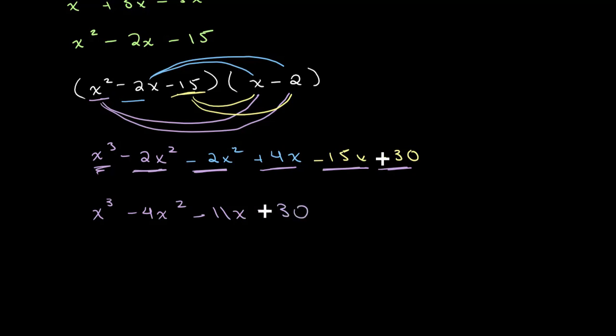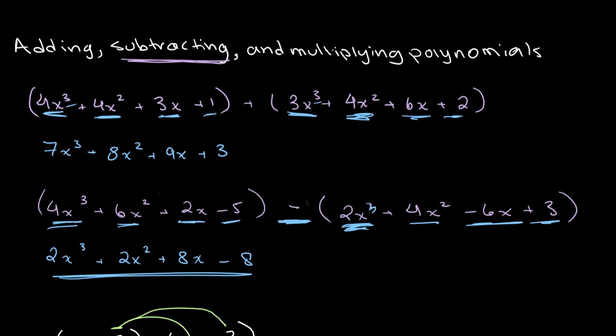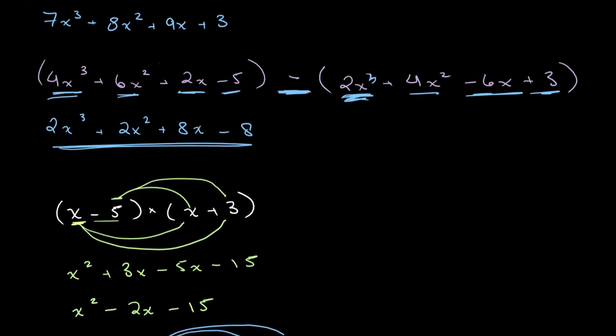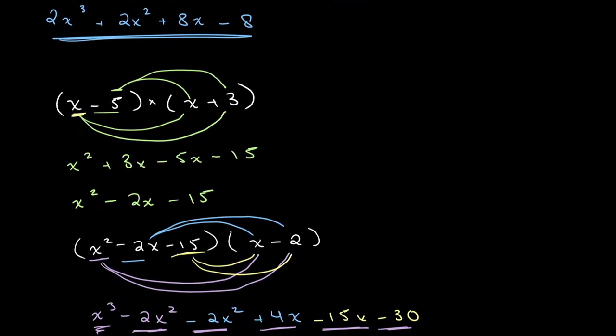So just as a quick recap: when we're adding and subtracting polynomials, what we want to do is match like terms and then add or subtract the coefficients. And when we are multiplying polynomials, we want to multiply every single factor on the left by every single number on the right.